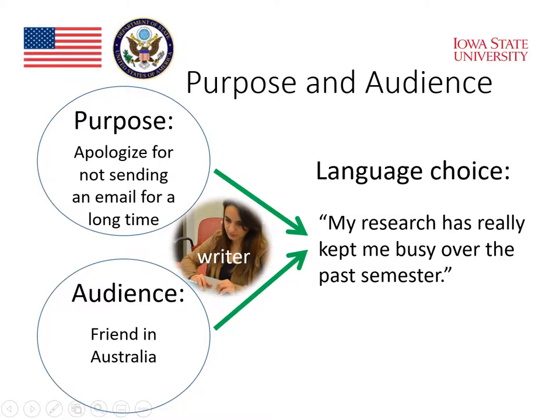Let's take a closer look at what Professor Kotos means by purpose and audience. For example, we have a writer who is a graduate student at Iowa State University, and she is writing an email to her friend in Australia. The friend in Australia is going to be the audience for the email. Even if there's only one person, we consider her the audience, because she is the person that is going to receive and read the email. She's the one that we need to write appropriately for.